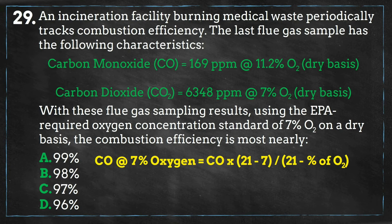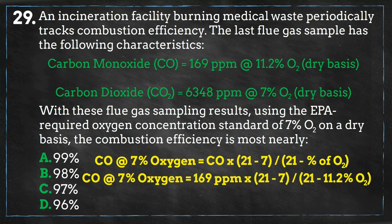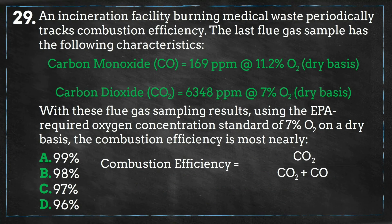This equation uses the atmospheric oxygen percentage of 21% to get an approximate value of what the concentration would be at 7% oxygen. The oxygen level at which the carbon monoxide measurement is taken is 11.2. So we will plug that into our equation, along with the carbon dioxide concentration, and we get a value of 241.4 ppm for the equivalent carbon monoxide concentration.